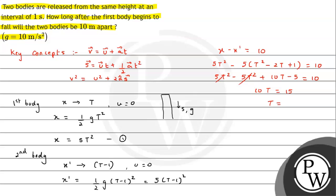So we can see how long after the first body begins to fall - that means we have considered that the time is T. So in time T, how much distance the first body covers is 5T squared, and second body in T minus 1 second covers 5 times T minus 1 the whole squared.